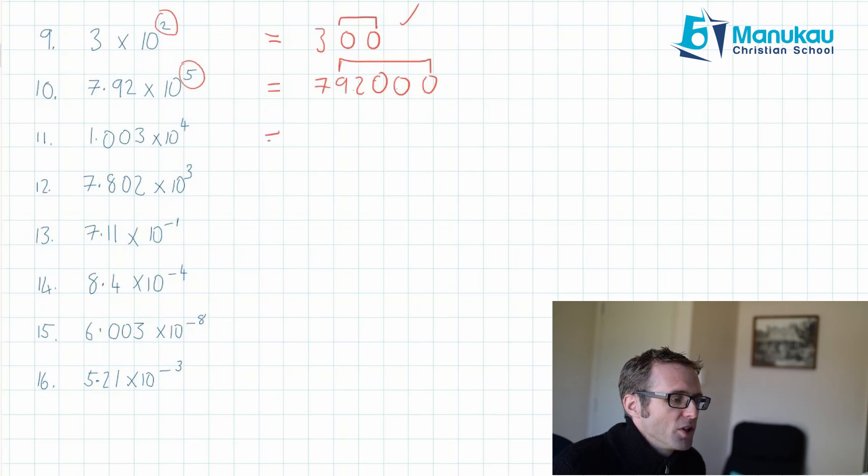Next, 1.003 times 10 to the 4. 10 to the power of 4 is 10,000, so this is going to be 10,000 and something. And you can see it's going to be 10,030. You do a quick check. Do I have 4 numbers after my first 1 here? Yes, I do. Yes, I'm correct. Let's work on the next one. 7.802 times 10 to the power of 3. So I write 7, 802. Do I have 3 numbers after my 7? Yes, I do. I'm correct.